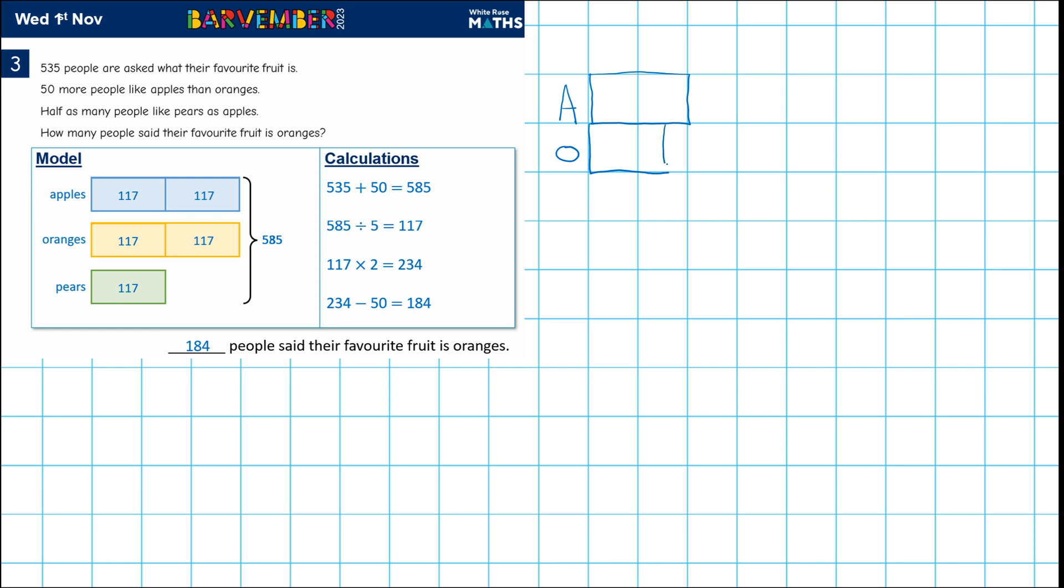Okay, and that's going to be smaller than the bar for apples. Okay. And the difference, the difference here is 50.